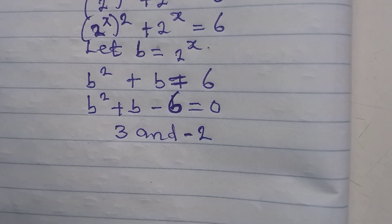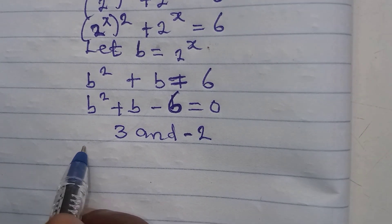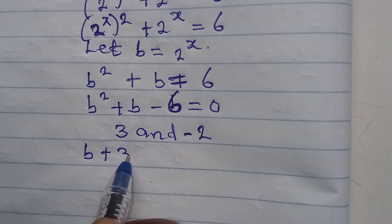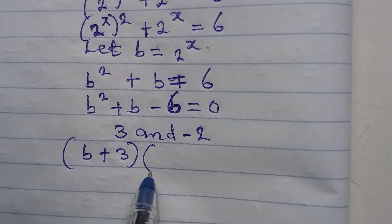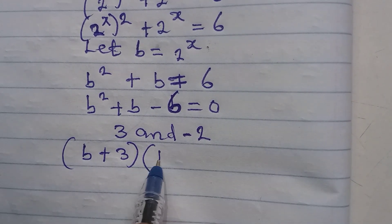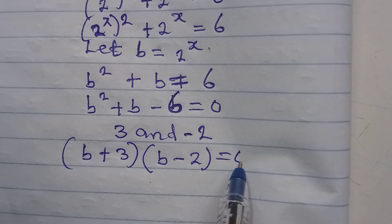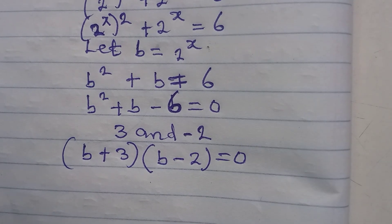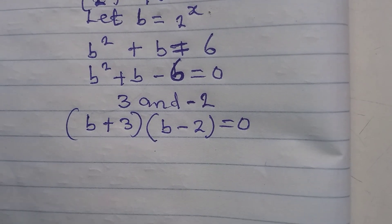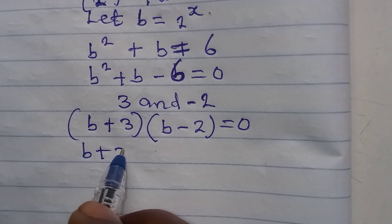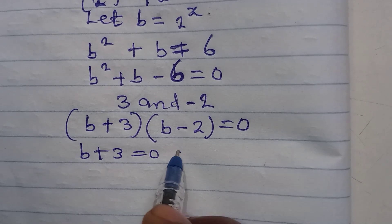So we factor directly to get (b plus 3)(b minus 2) equals 0. From here, it is either b plus 3 equals 0, or b minus 2 equals 0.